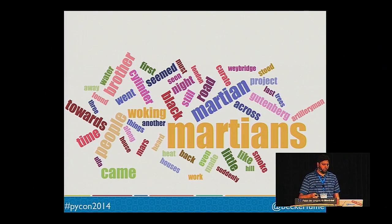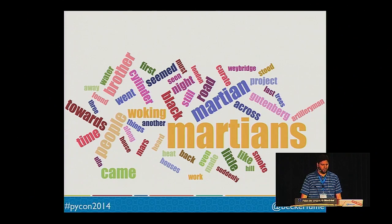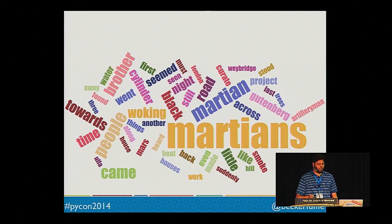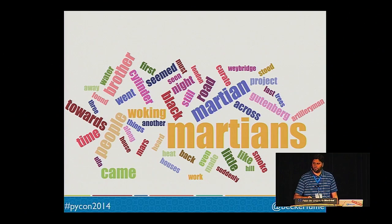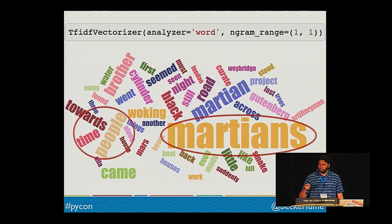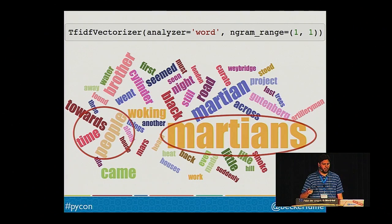TF-IDF stands for Term Frequency Inverse Document Frequency. It reflects how important a word is to a specific document in a collection of documents. The TF-IDF value increases based on the number of times an n-gram appears in a specific document, but this is offset by the frequency of the n-gram in the rest of the documents. In this example, a document is one of the six H.G. Wells' books. You'll notice the word 'Martians' is comparatively bigger because it was weighted higher than more common words like 'people' and 'time.'